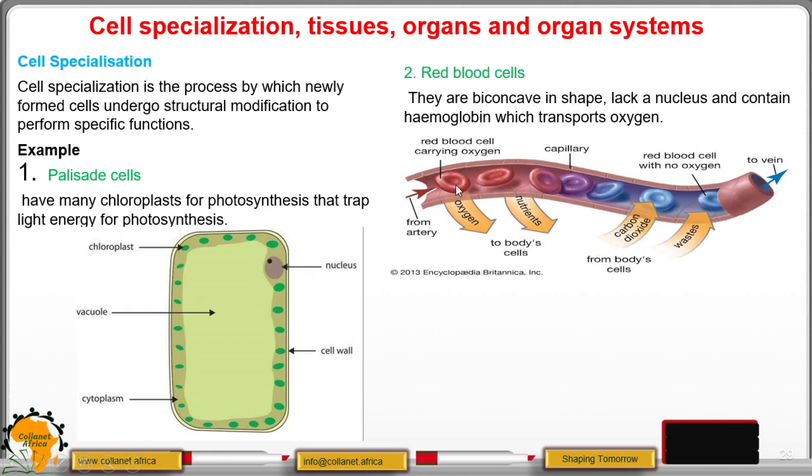And then it has oxygen diffusing from it to the tissues as well as nutrients. So on the other hand, carbon dioxide and metabolic wastes from our cells diffuse to the blood or to the red blood cells to be transported to the lungs for removal.